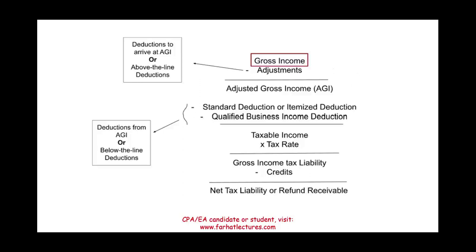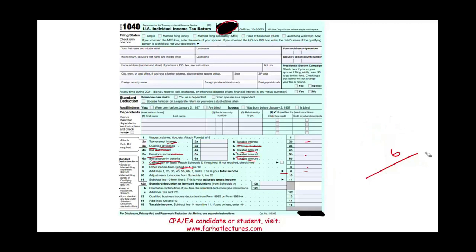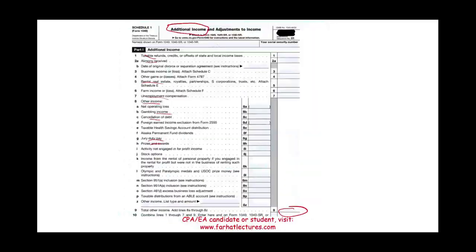From income, the government says you can deduct certain adjustments — basically take your income minus expenses to arrive at something called an important concept in taxation: adjusted gross income, or AGI. AGI deductions are called above-the-line deductions. So let's take a look at the adjustments on the income tax return. Let's use numbers. Let's assume your total income happens to be $100,000.